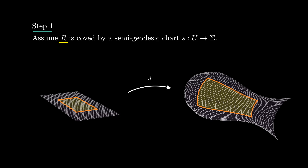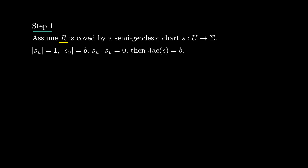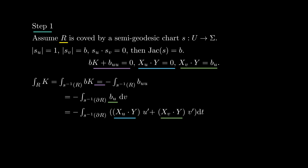Now we go to step one in the proof of the Gauss-Bonnet formula. We take a region R as in the lemma and assume it is small enough to be covered by a semi-geodesic chart S. Semi-geodesic charts come with a function b given by the length of s_v. Since s_u has length 1 and is perpendicular to s_v, the Jacobian of a semi-geodesic chart s is also given by b. Recalling the Jacobi equation and the identities from last lesson, where x and y are the unit vectors in the directions of s_u and s_v respectively: the integral of the Gauss curvature over R equals the integral of bK over s-inverse of R. By the Jacobi equation, this is minus the integral of b_uu. By the Green-Stokes theorem, this is minus the integral of b_u dv along the boundary. By the identities above, this can be rewritten as x_u · y du + x_v · y dv. By the previous proposition, this equals the total geodesic curvature of gamma modulo 2pi, concluding step one.